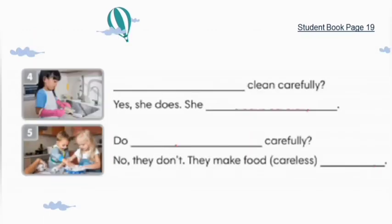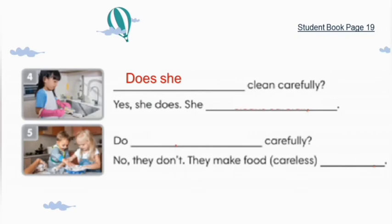Number four — ada seorang anak perempuan, dan kita bisa menggunakan subjek 'she'. Kita lihat jawabannya: yes. Berarti tipe pertanyaannya adalah yes or no question. Kita mulai dengan 'does', kemudian subjeknya 'she': Does she clean carefully? Apakah dia membersihkan dengan hati-hati? Jawabannya: Yes, she does. She cleans carefully.